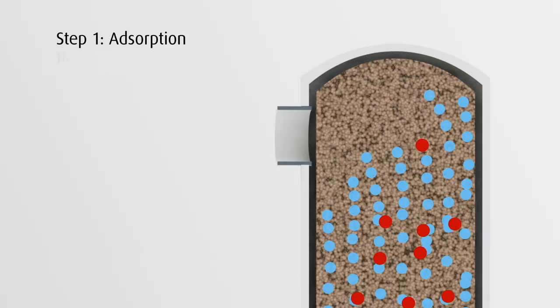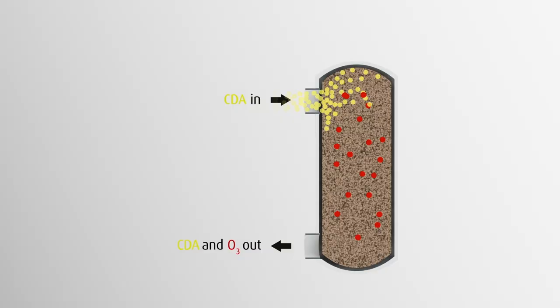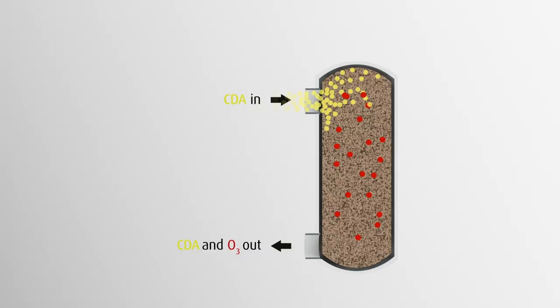The ozone is attracted to the pores of the sieve material, where it remains captured until the next step. Meanwhile, the unabsorbed oxygen passes through the bed and is recycled back to the ozone generator.